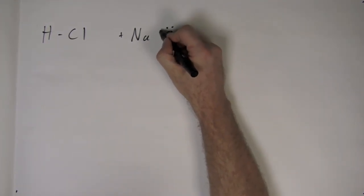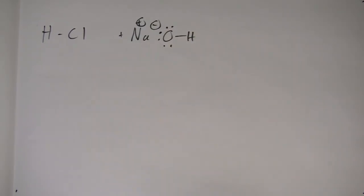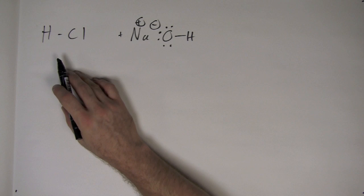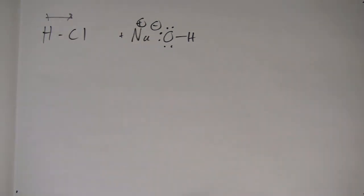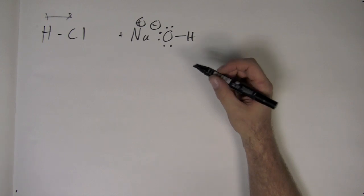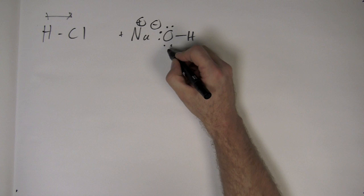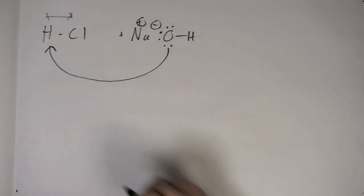Remember in organic chemistry electrons do all the work. In polar mechanisms electrons move from a negative or partially negative atom towards a positive or partially positive atom. In polar mechanisms electrons move as pairs. Double headed arrows are used to show the movement of two electrons. The back of the arrow shows where the electrons start and the head of the arrow shows where they go.